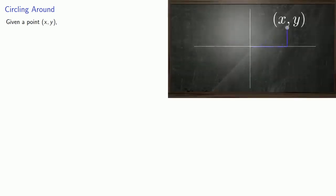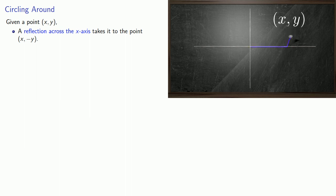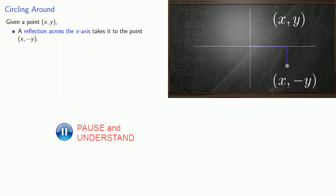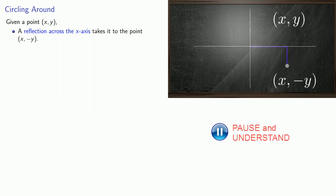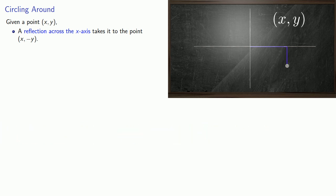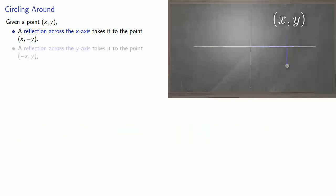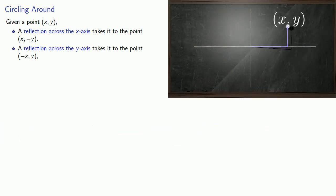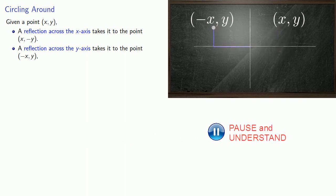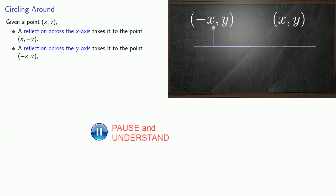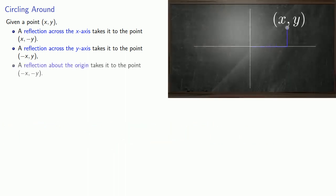Given a point, a reflection across the x-axis will take it to the point with coordinates (x, -y). Likewise, if we reflect it across the y-axis, we go to the point (-x, y). And a reflection across the origin will take us to the point with coordinates (-x, -y).